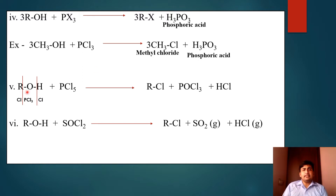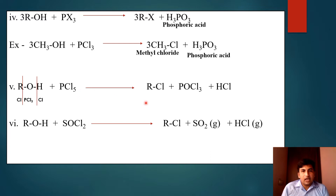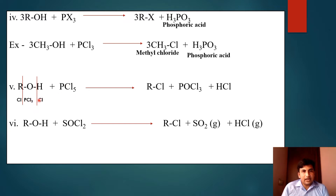The fifth method: previously we used phosphorus trichloride; here we take phosphorus pentachloride (PCl₅). Alcohol is treated with phosphorus pentachloride. RCl (alkyl chloride) is obtained along with POCl₃ and HCl. We can easily identify the products: RCl, POCl₃, and HCl.